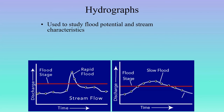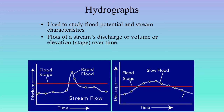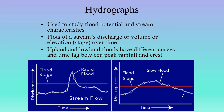Hydrographs are used to study potential flood characteristics for streams. Here we see two different ones that plot a stream's discharge, volume, elevation, or stage over time. The red lines represent flood stage. Upland and lowland floods have completely different curves. The sharp up-and-down curve represents an upland or flash flood — the time scale here would be in hours, maybe a couple of days maximum. You see a big rain event up in the mountains, all that water rushes down the canyon, and then it's gone.